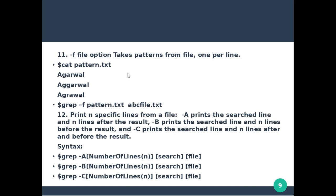Minus F is the option to take a pattern from a file, one per line. We have a pattern dot txt file. Using grep minus F pattern dot txt abc file dot txt, we use the patterns listed in pattern.txt to search in the abc file.